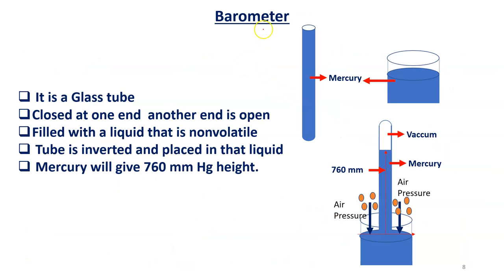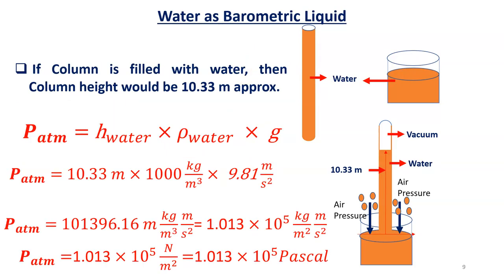To summarize the barometer: it is a glass tube closed at one end and open at the other, filled with a non-volatile liquid, inverted and placed in that liquid. Using mercury gives a height of 760 mm. If we instead use water as the barometer liquid, the height would be 10.33 meters.